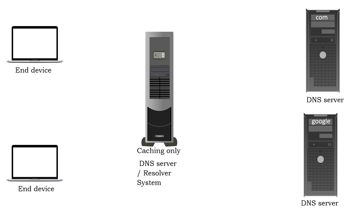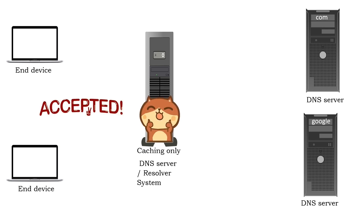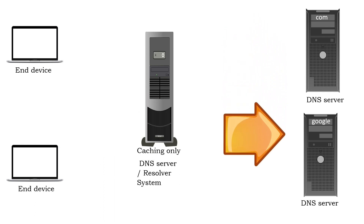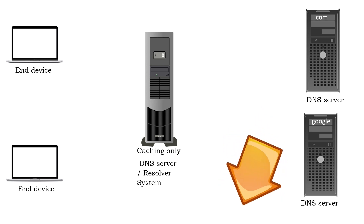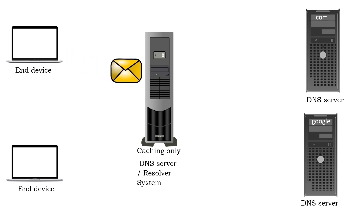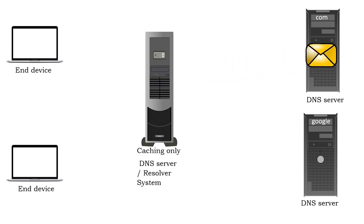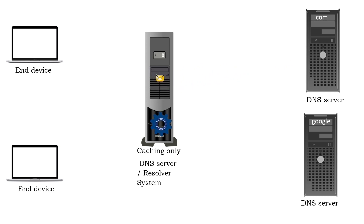A caching-only DNS server is a resolver system. It accepts recursive requests from clients, contacts all configured DNS servers using non-recursive queries in a sequence until it gets the answer to each request, stores the answers in the cache, and replies to the requester clients. When it receives a request from a client, it first tries to resolve that request from the cache. If it fails to resolve the name, only then it contacts the configured DNS server to resolve that name. It stores the answer from each DNS server in the cache for further use.